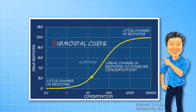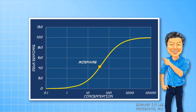Consider the analgesics. Morphine operates largely in the middle part of the concentration response curve, so you can vary the dose over a fairly wide range to adjust the level of analgesia required. A drug like paracetamol, however, operates near the maximum, so there is very little analgesic advantage in increasing the dose of paracetamol.